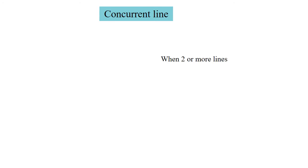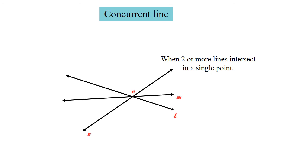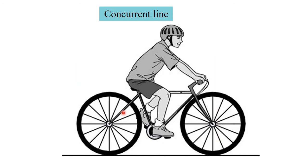The next type is concurrent lines. When two or more lines intersect at a single point, those lines are called concurrent lines. Here, line L, line M, and line N are intersecting at point O, so point O is called the point of concurrence. Look at this bicycle wheel — you can see concurrent lines, as multiple lines intersect at one central point. This is an example of concurrent lines.